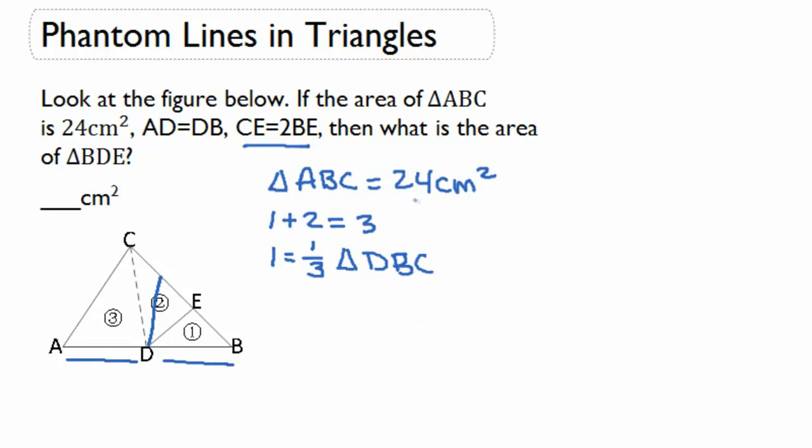If we know that the entire triangle is 24 centimeters squared, and we know that we've already used up half in triangle 3, we can take our 24 centimeters and divide by 2. That's going to give us 12 centimeters squared.